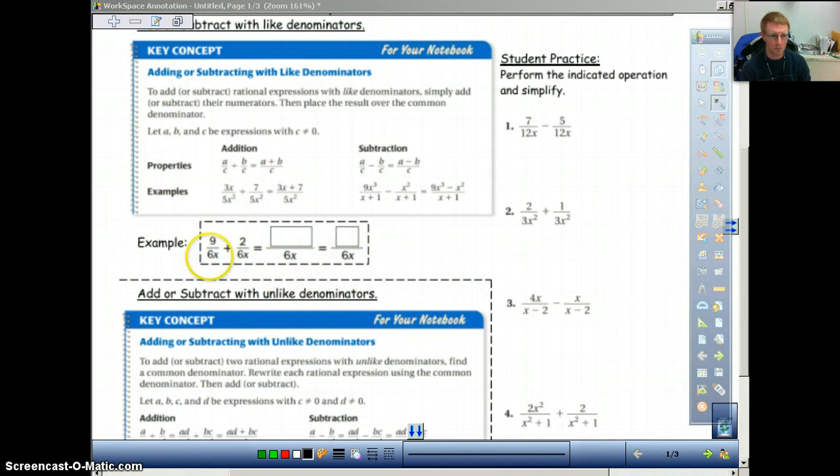So what we'll do is because 6x and 6x are the same, we can just combine the top. Nine plus two is 11. We do nine plus two, I'm just showing you every step here, and that's equal to 11 over 6x. Now, make sure you're paying attention to see if this can be simplified anymore. Always factor where needed and make sure that nothing can be canceled out. Because 11 and 6 are not common factors, we cannot do anything. So that is our final answer.